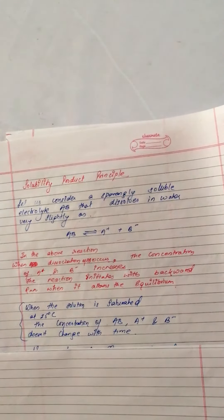In the above reaction when dissociation occurs, the concentration of A+ and B- increases until the concentration reaches equilibrium with the backward reaction.